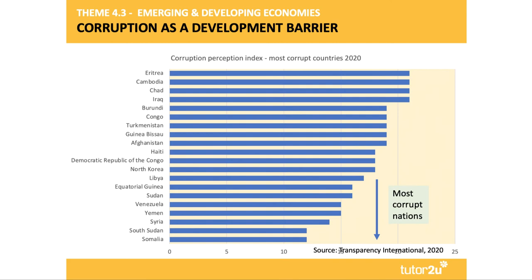Transparency International is an organisation that tries to gauge levels of perceived public sector corruption across the world. The index scores from zero, which is highly corrupt, to 100, which is basically clean. The average score is 43, and two thirds of countries scored less than 50. Research every year finds that corruption is pretty rampant across the world, and perhaps COVID-19 has made it worse.